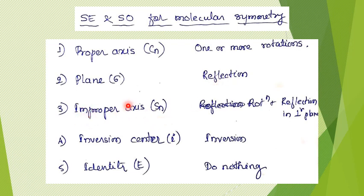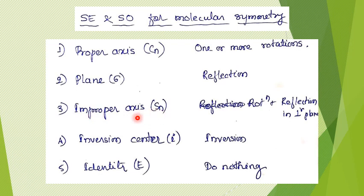The third symmetry element is the improper axis of rotation, indicated by S-n (S subscript n). The improper axis is essentially a combination of a proper axis and a plane — it involves first rotating the molecule and then taking a reflection in a plane. Importantly, the plane used for reflection must be perpendicular to the rotation axis. We will understand this in detail when we cover the improper axis; for now, it is a separate symmetry element with the operation being rotation plus reflection.